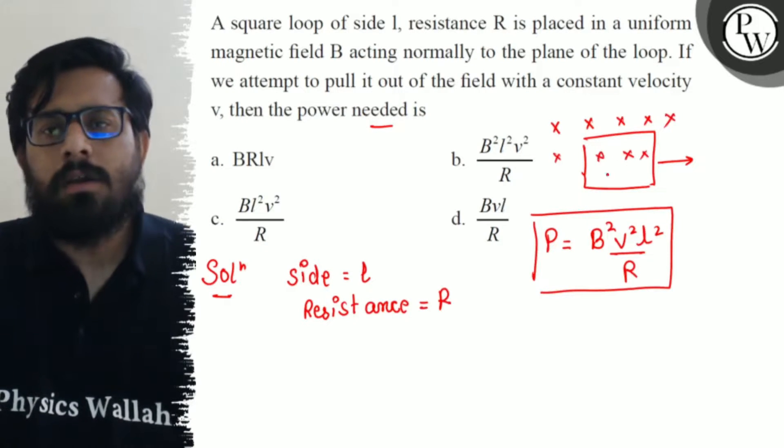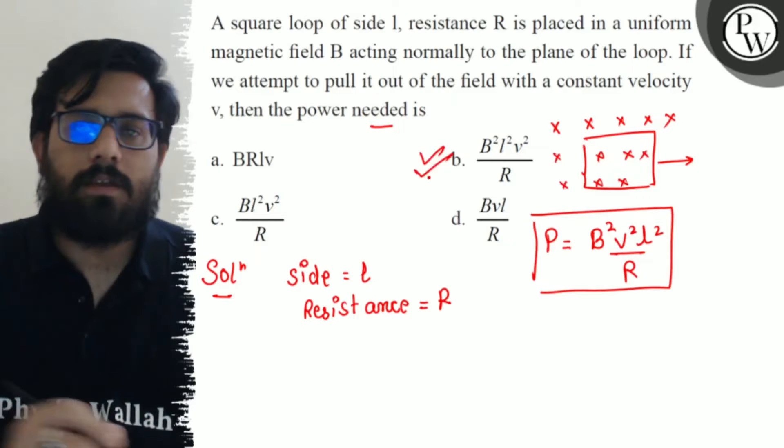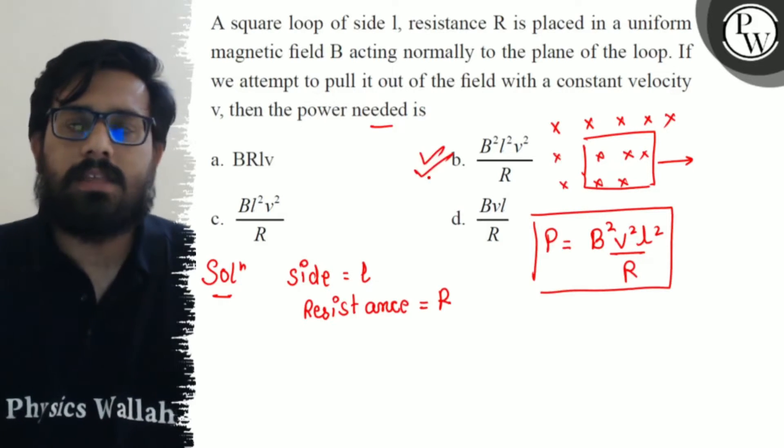So our option number B is absolutely right for this question. B square V square L square upon R is the power needed.